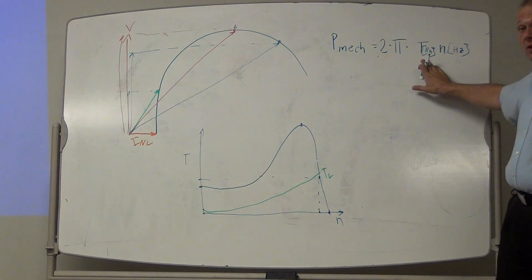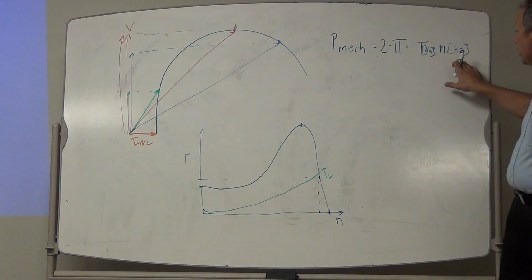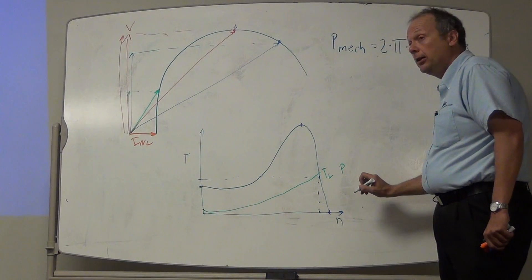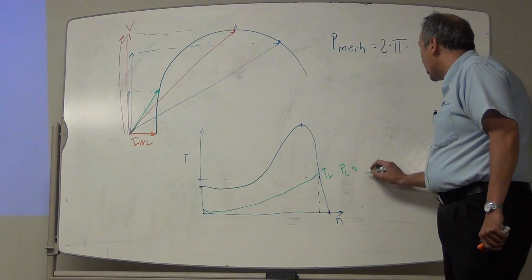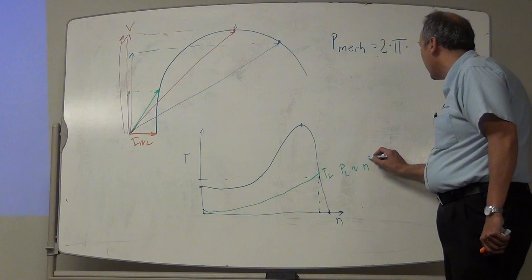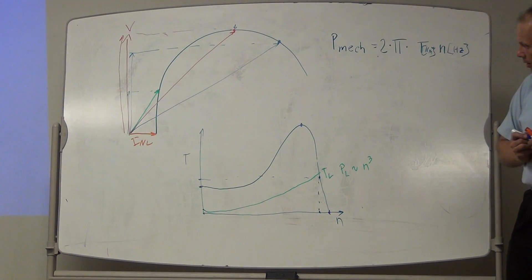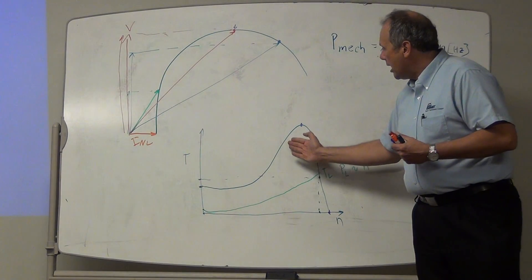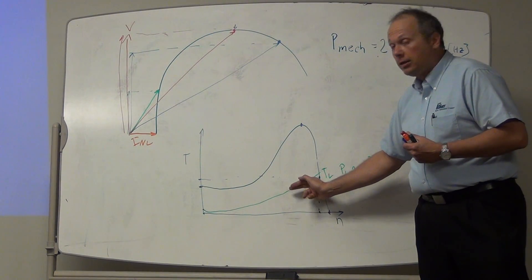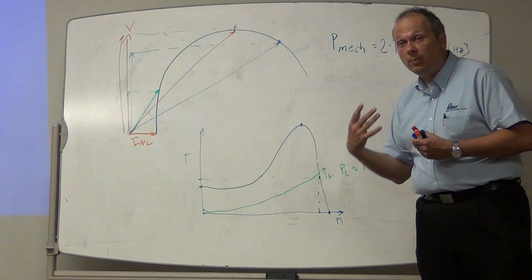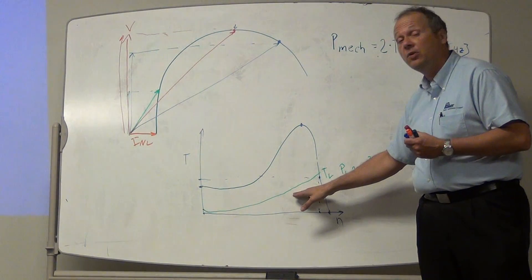That means that my power of the load is proportional to the cube of the speed, the third power of the speed. But now I need to relate the blue and the green. The blue is the capability of the motor, and the green is the requirement of the load.